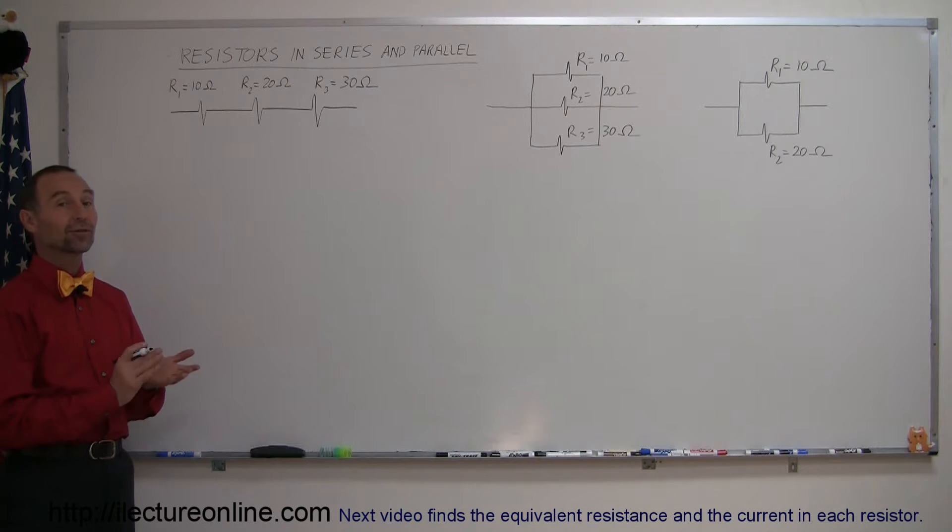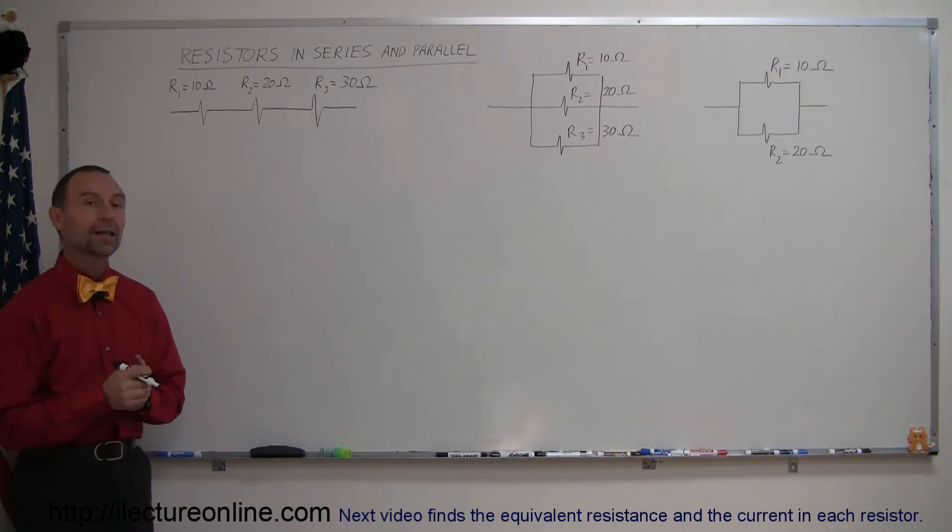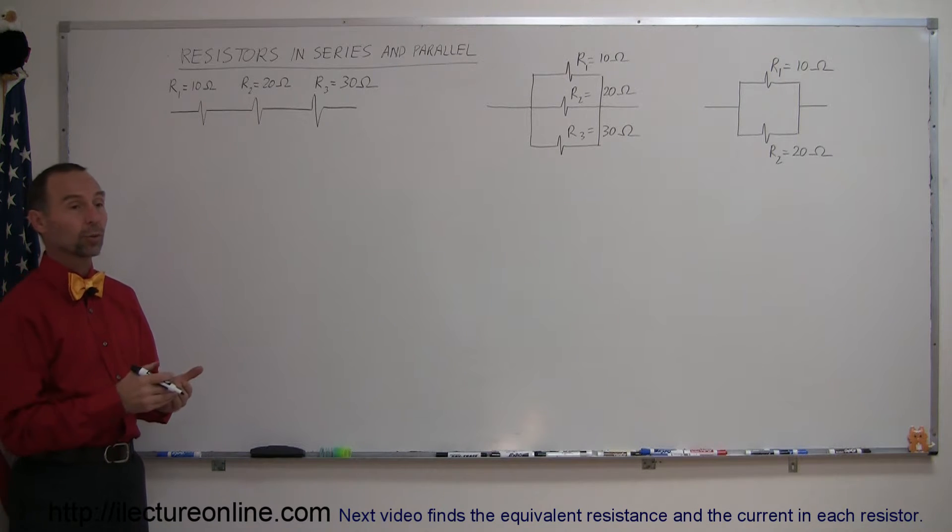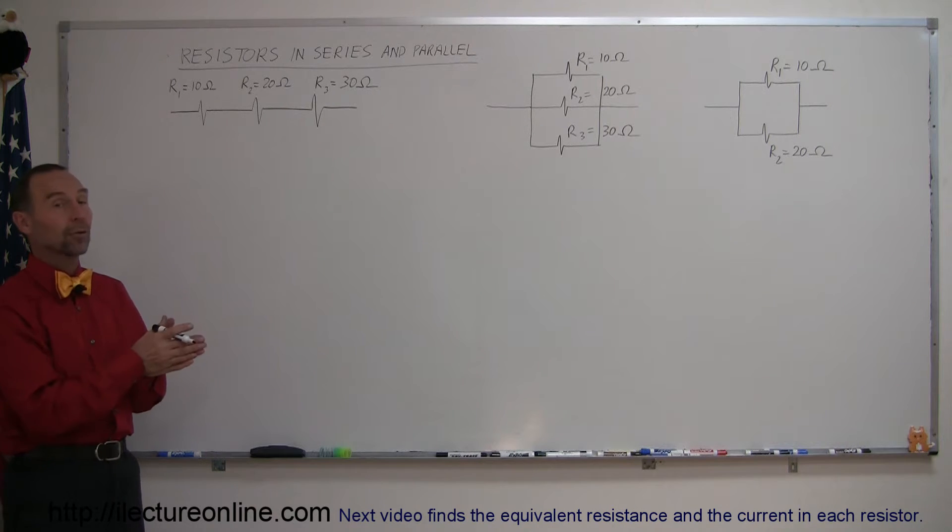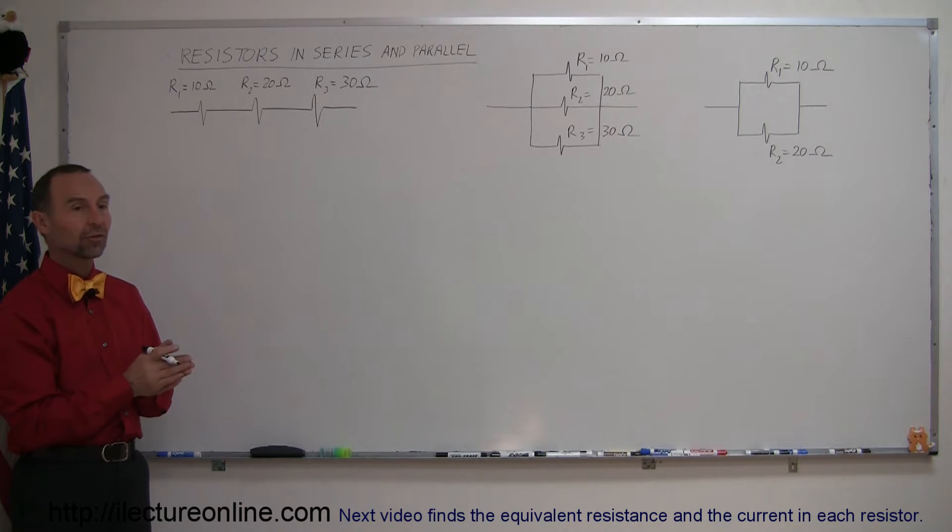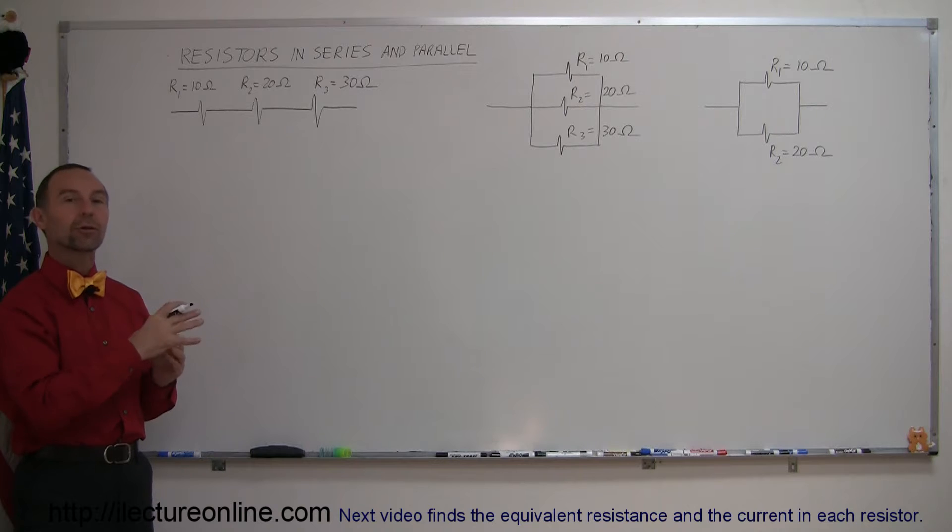Welcome to iLecture Online and here's something new. We're going to be talking about resistors in series and parallel, and this is related to direct current circuits where we have current flowing in one direction from some sort of battery or power source. It's going to flow through a series of resistors and then we have to figure out what the current is that flows through the circuit.